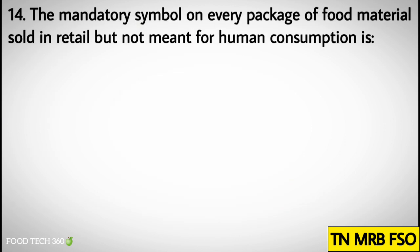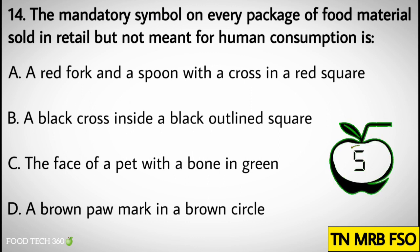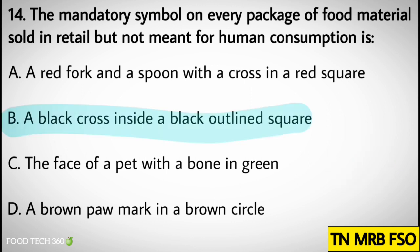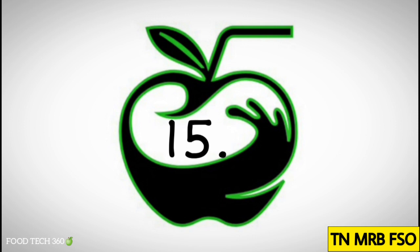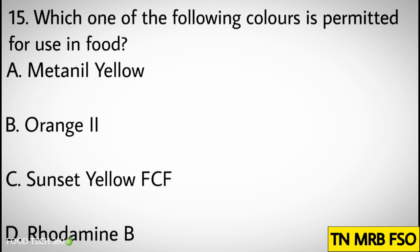Question number fourteen: The mandatory symbol on every package of food material sold in retail but not meant for human consumption is — A) A red fork and spoon with a cross in a red square, B) A black cross inside a black outline square, C) The face of a pet with a bone in green, D) A brown paw mark in a brown circle. Correct answer: B) A black cross inside a black outline square.